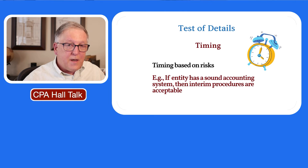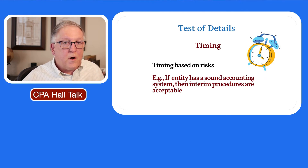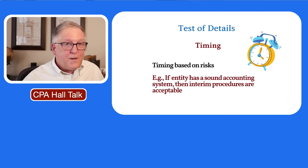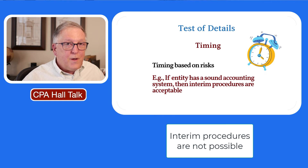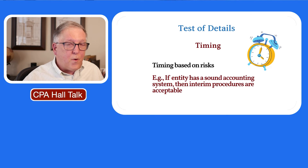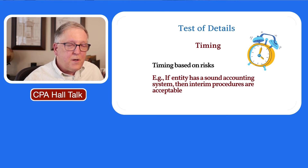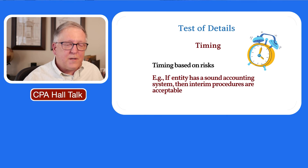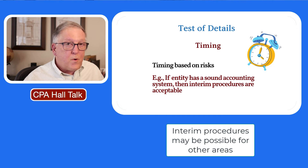In terms of timing — the second issue for test of details — sometimes we wonder when we should perform a particular audit procedure. With bank reconciliations, it's pretty obvious you can't look at one until after it's created. So if you have a calendar year client, you can't test the bank reconciliation before it's created, which is probably the first or second week of January of the subsequent year. In that situation, you could not do interim procedures in October or November for that type of test of details.